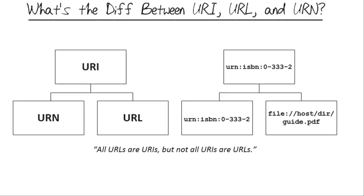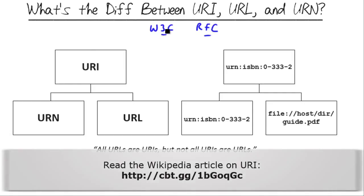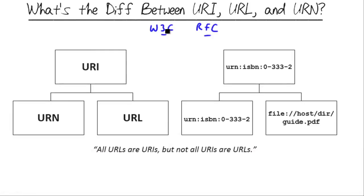Now, we can get into a huge discussion of semantics here. You can look at the source documents that define these terms — the World Wide Web Consortium, or W3C. You can look at the Request for Comments, or RFC libraries. Actually, Wikipedia has a pretty good article on URI that, if for no other reason, is good because it points you to the relevant W3C and RFC white papers.